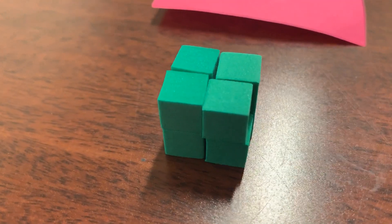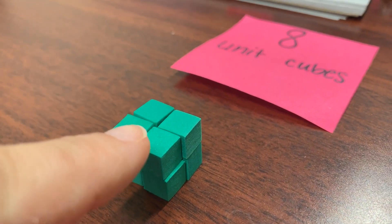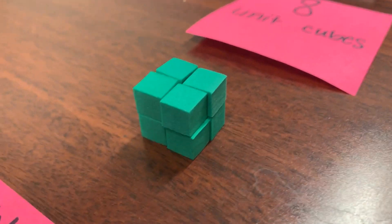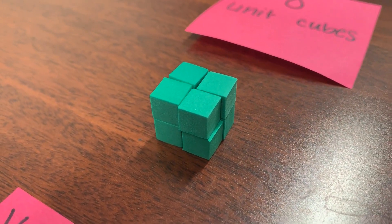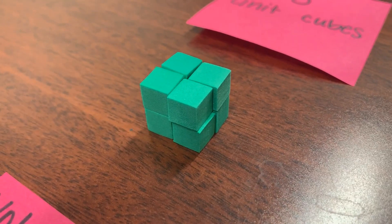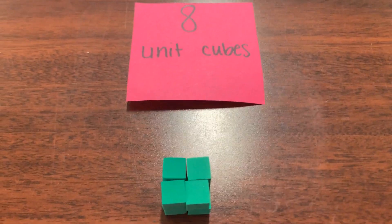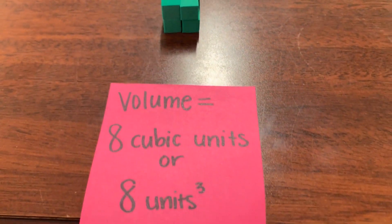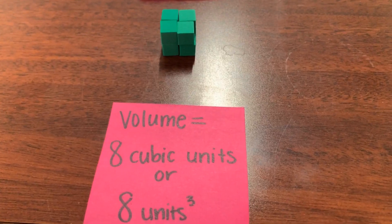So if I look here, I have one, two, two layers of four cubes. Think about your repeated addition and multiplication facts. If I have two layers of four cubes, four plus four or four times two is eight. So there's a total of eight unit cubes, which will mean the volume is eight cubic units or eight units cubed.